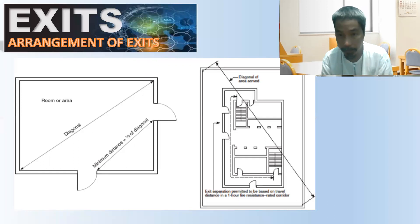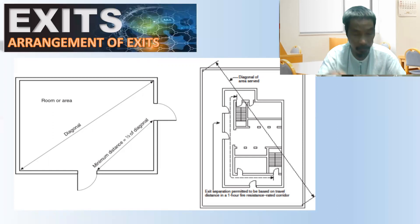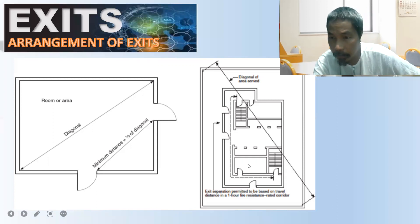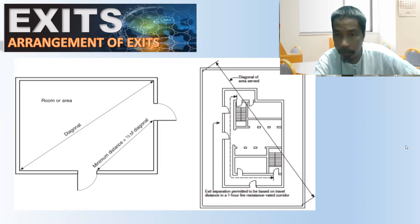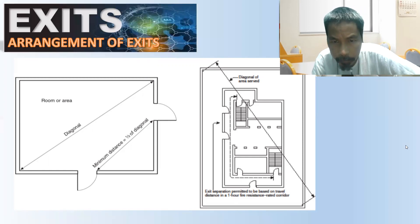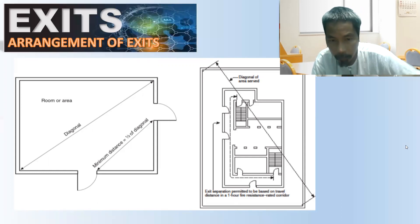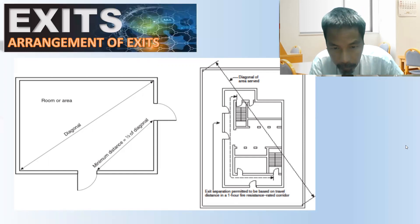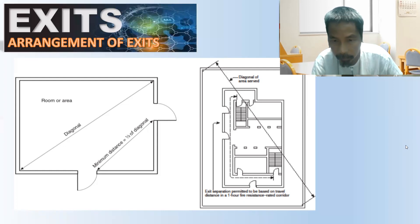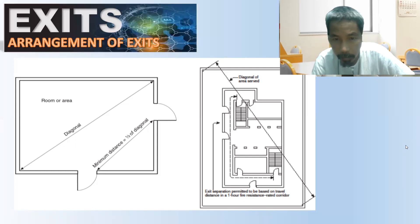That is paragraph A. For the figure on the right, exit separation is permitted to be based on travel distance in a one-hour fire-resistance-rated corridor. Where exit enclosures are interconnected by not less than a one-hour fire-resistance-rated corridor, exit separation shall be measured along the line of travel within the corridor.